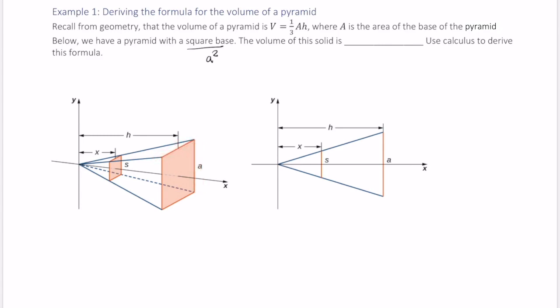So the volume of this solid is one-third a squared h. And I'll write that equals its volume. So we're going to derive this formula.